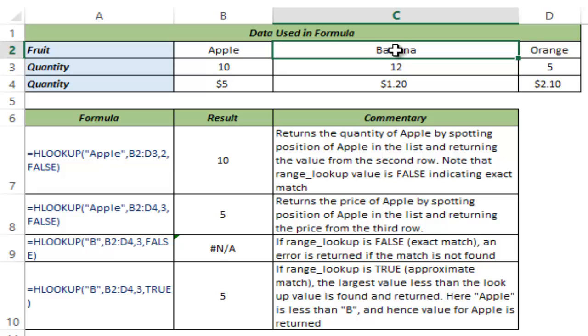And it sees that banana is greater than that. So it reverts back to apple and returns the value corresponding to apple here. So this is how approximate match works.